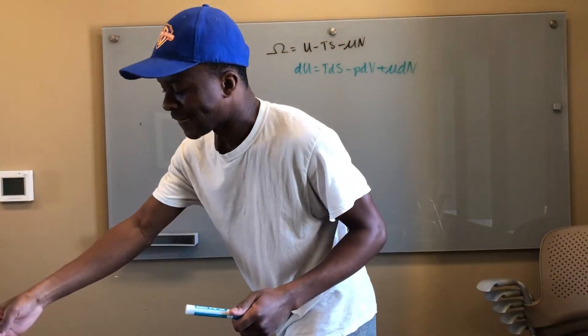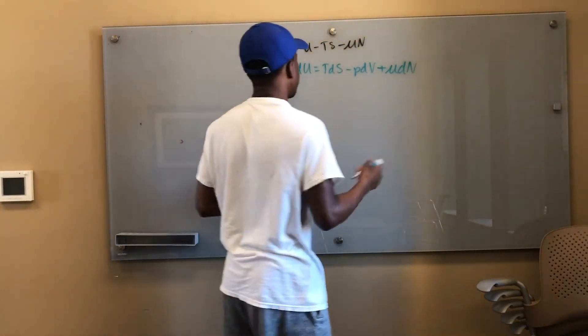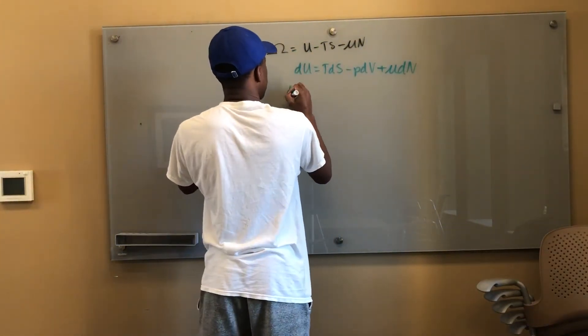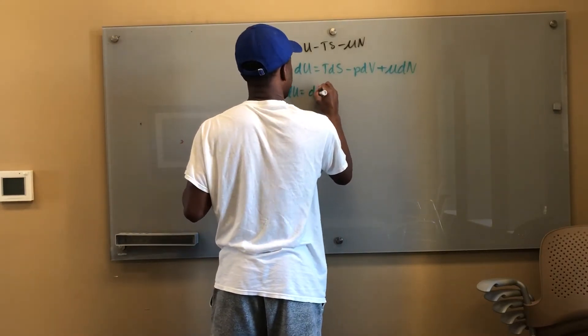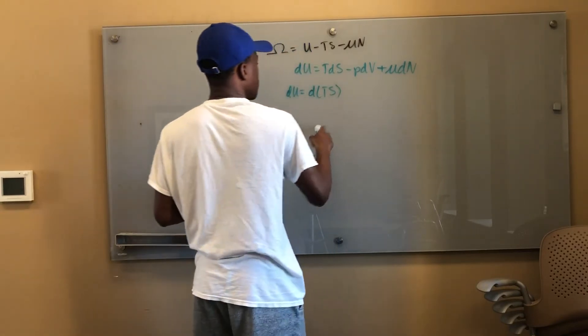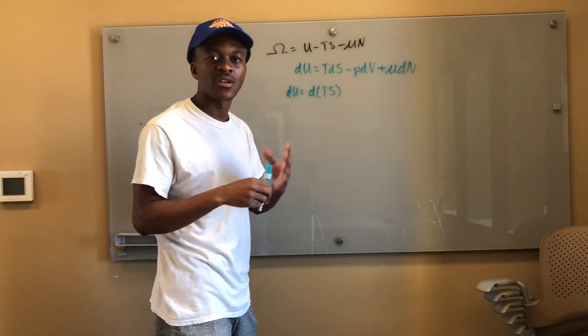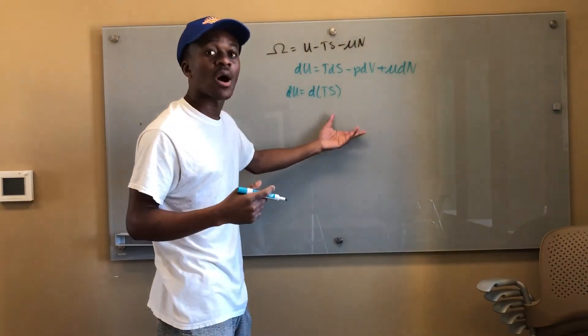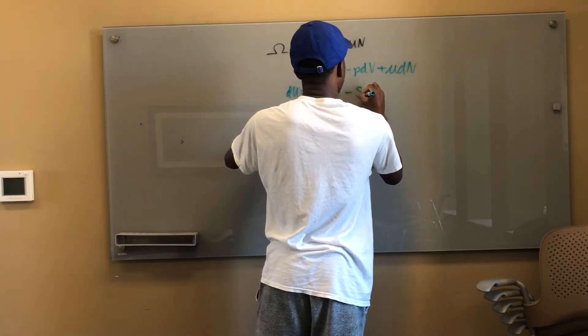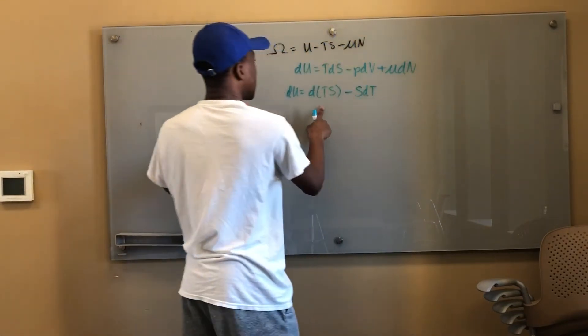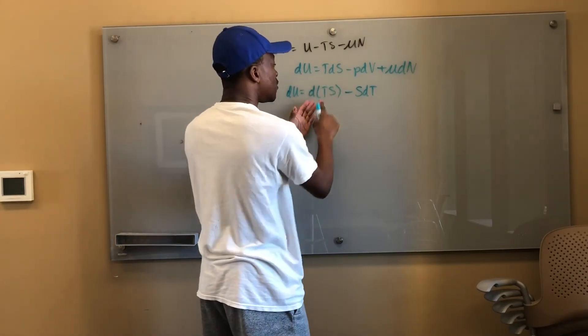Again, dU equals—we don't leave our TS as it is, dTS, and I'm just gonna sort of take a shortcut here. You've seen how I've gotten the other things and you know how I'm gonna get this one. So I know that dTS is gonna leave me with minus SdT, because I had a TdS there before. This dTS, TdS is equal to dTS minus SdT basically.